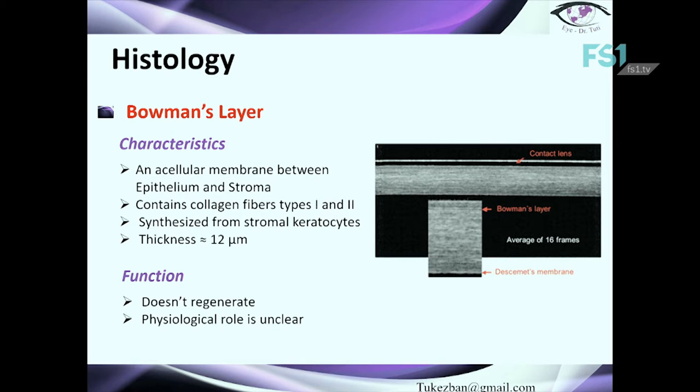Bowman's layer is an acellular membrane that contains collagen fibers type 1 and type 2. These collagen fibers are synthesized from keratocytes of the stroma. The thickness of Bowman's membrane is approximately 12 microns. Its physiological role is actually unclear, and importantly, it does not regenerate.